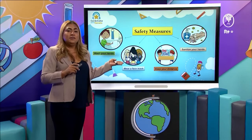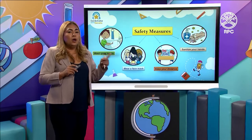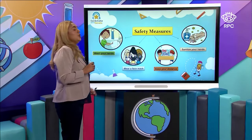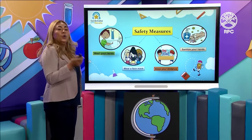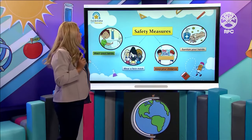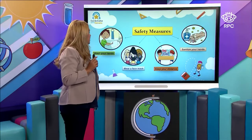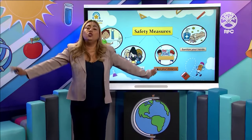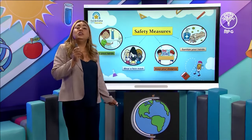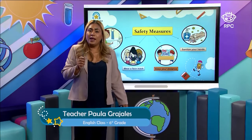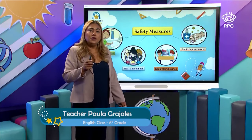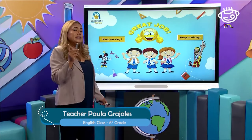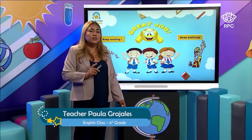Let's continue with the safety measures — just to remember what you have to do to protect yourself from the coronavirus. You need to wash your hands with plenty of soap and water. You need to wear a face mask. It's important to keep your distance — two meters of distance — and then you need to sanitize your hands with alcohol. This is something you have to do constantly to protect yourself from the virus. Thank you so much.